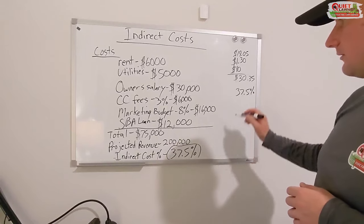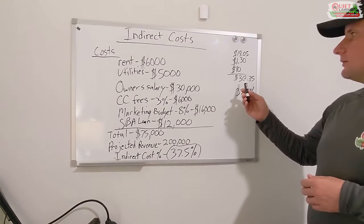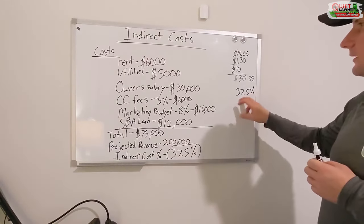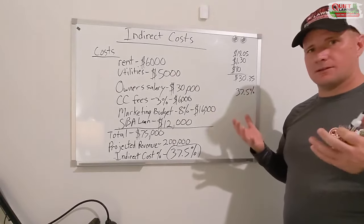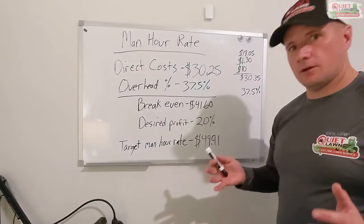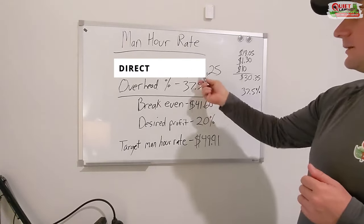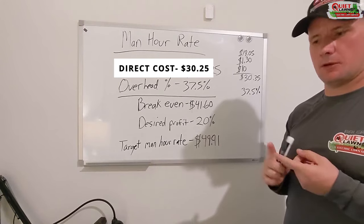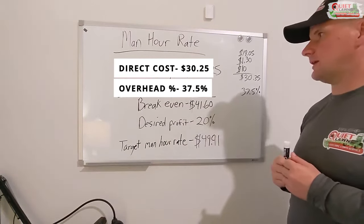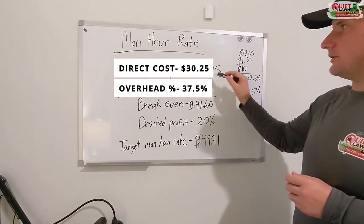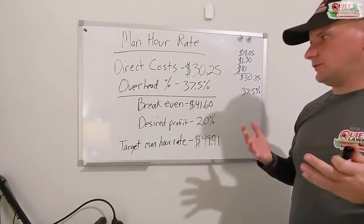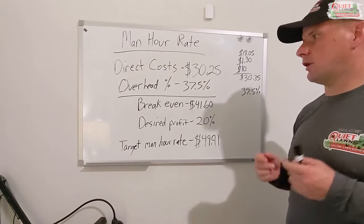So we've calculated our direct hourly cost and our overhead percentage at 37.5%. Now let's add in our profit margin and see what our hourly price needs to be to hit our profit goals. We've calculated our direct cost which added up to $30.25 per hour including our labor, equipment, and vehicle. We multiply $30.25 by 1.375 — that gives us a very important number called our break even. In this case it was $41.60 per man hour.